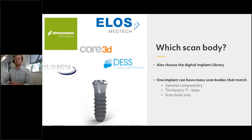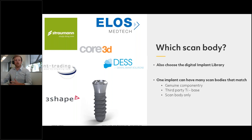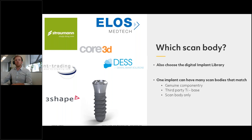Or we can go with a scan body that is just the scan body only and relates to many different tie bases. For example, 3Shape have made a scan body of their own out of titanium — this scan body tells us where the implant location is, and then you can use multiple different tie base libraries. So when deciding which scan body to choose, you have to think one step ahead to the CAD: which tie base am I going to use?